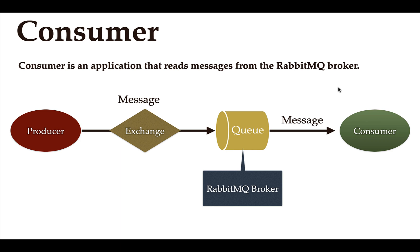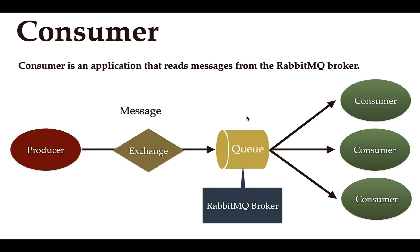There can be multiple consumers that subscribe to the RabbitMQ broker. For example, consumer one, consumer two, and consumer three — these three consumers have subscribed to the RabbitMQ broker. Whenever a producer sends a message to the broker, all these consumers will read that message.